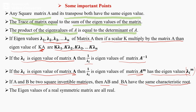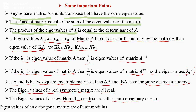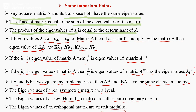The eigenvalues of a real symmetric matrix are always real. The eigenvalues of a skew-Hermitian matrix are either pure imaginary or zero. The eigenvalues of an orthogonal matrix are of unit modulus. These are some important properties.